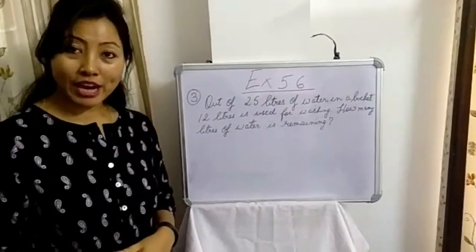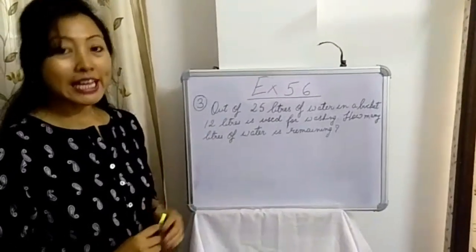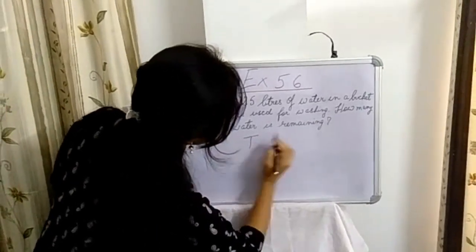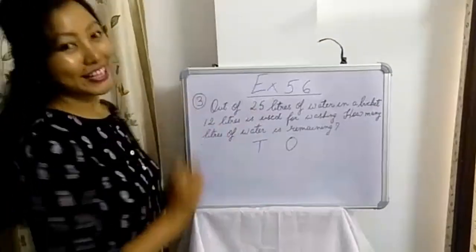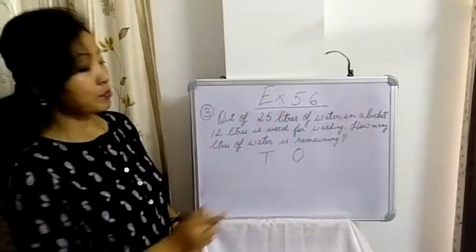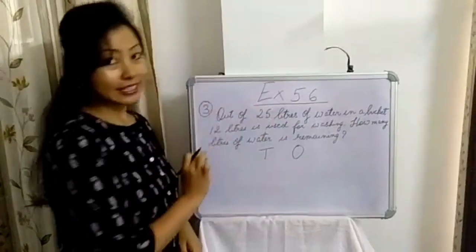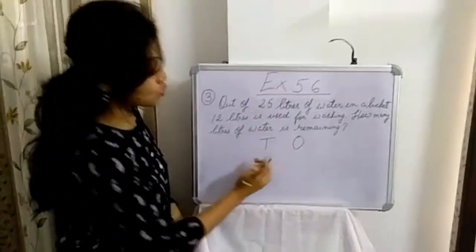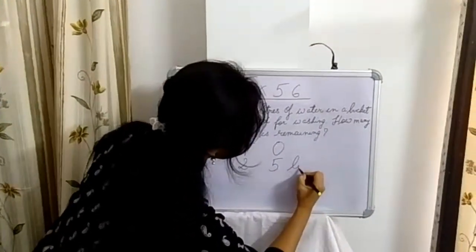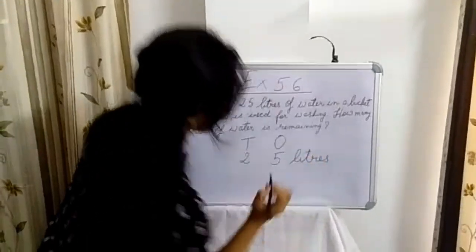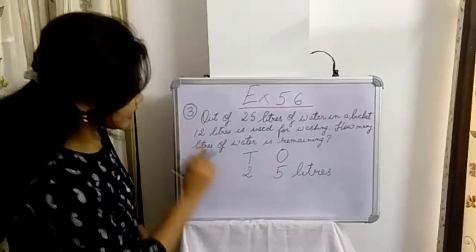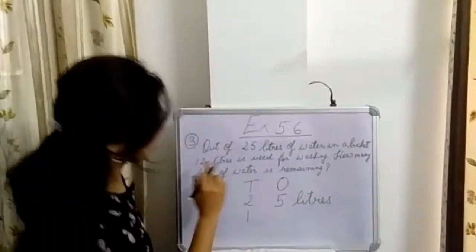So how are we going to subtract? We are going to subtract by using 10s and 1s. Here you can see 10s and 1s. First let us put the number 25 litres. 25 litres means 2 tens and 5 ones. Next is 12 litres. 12 litres means 1 ten and 2 ones.